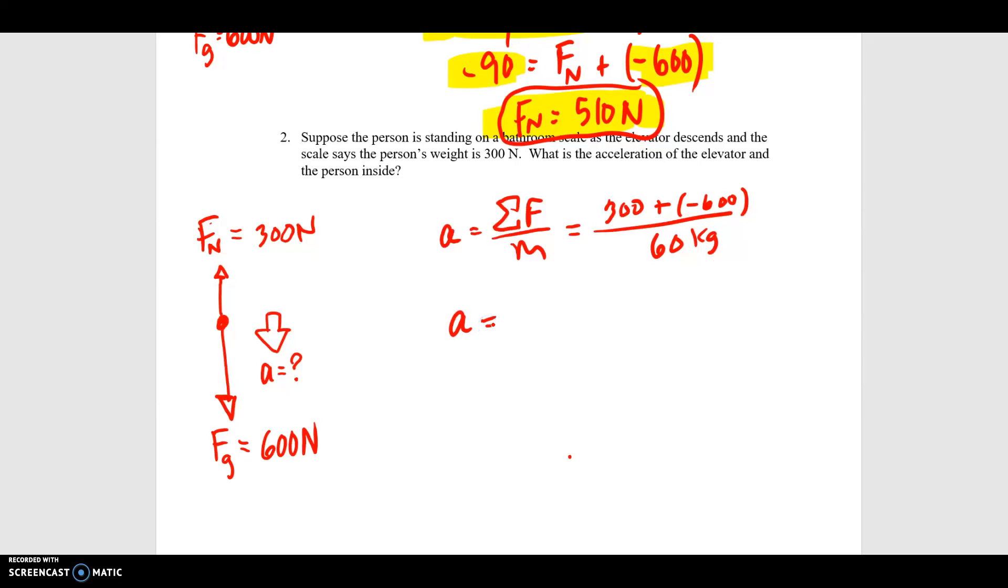So acceleration is going to be minus 300 newtons divided by 60 kilograms, and that is going to be minus 5. And the units for acceleration are going to be meters per second squared.